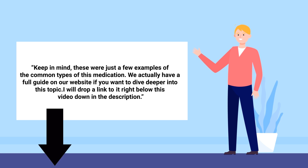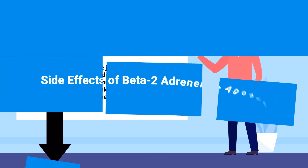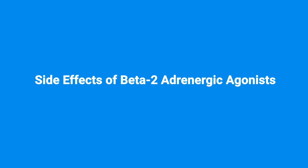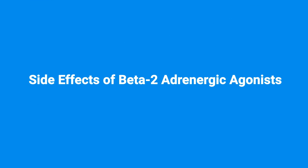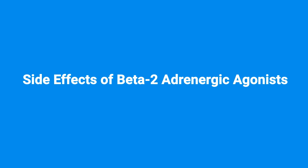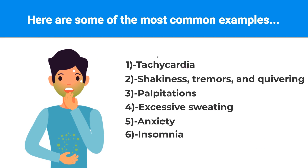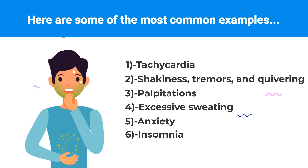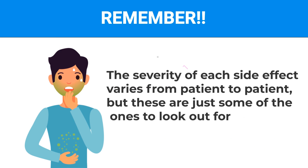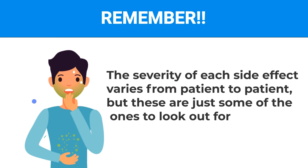Now let's talk about the adverse side effects of beta-2 adrenergic agonists. Here are some of the most common examples: tachycardia, shakiness, tremors and quivering, palpitations, excessive sweating, anxiety, and insomnia. The severity of each side effect varies from patient to patient, but these are just some of the ones to look out for.